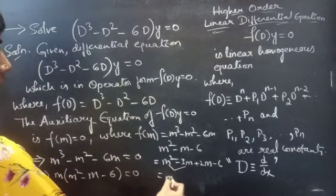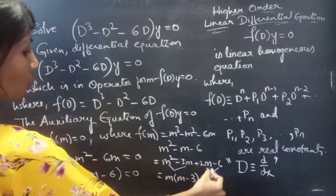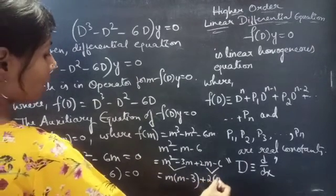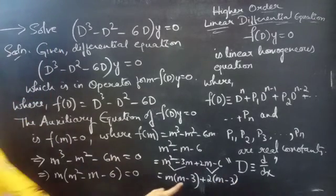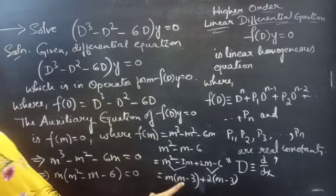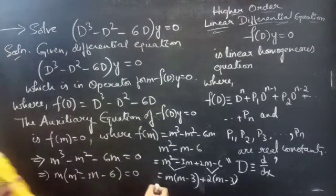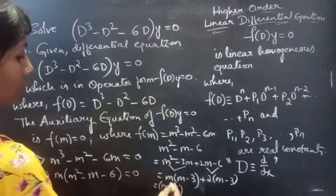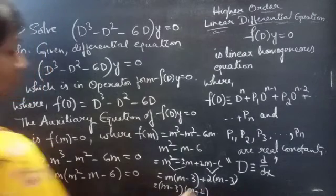Now take m common from all three terms. You will get m times m-squared minus m minus 6 equals to 0. Now factor the polynomial m-squared minus m minus 6. You can write minus m as minus 3m plus 2m. Take m common from the first two terms: m times m minus 3. Take 2 common from the next two terms: 2 times m minus 3.